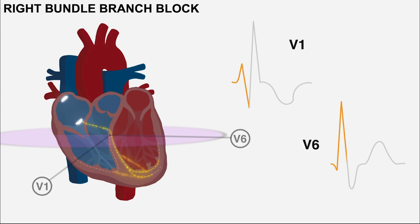The right ventricle still needs to be depolarized, so you will get depolarization moving across primarily from the septum and the left-sided fibers towards the right ventricle. As this depolarization is not traveling along specialized fibers, it takes a lot more time and has to cover a greater distance to depolarize the entire right ventricle, resulting in a broad upwards deflection in V1 and a downwards deflection in V6.